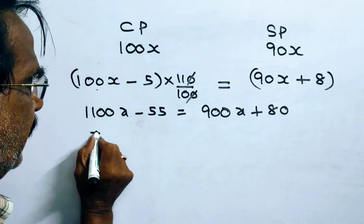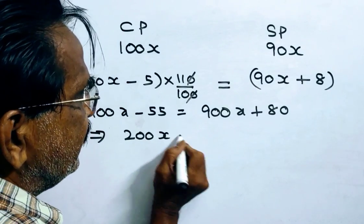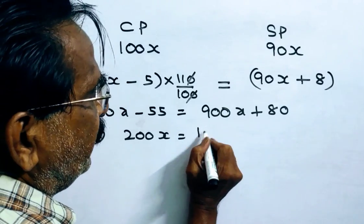Friends, it implies 1100 minus 900, 200x. 200x is equal to 80 plus 55, 135.